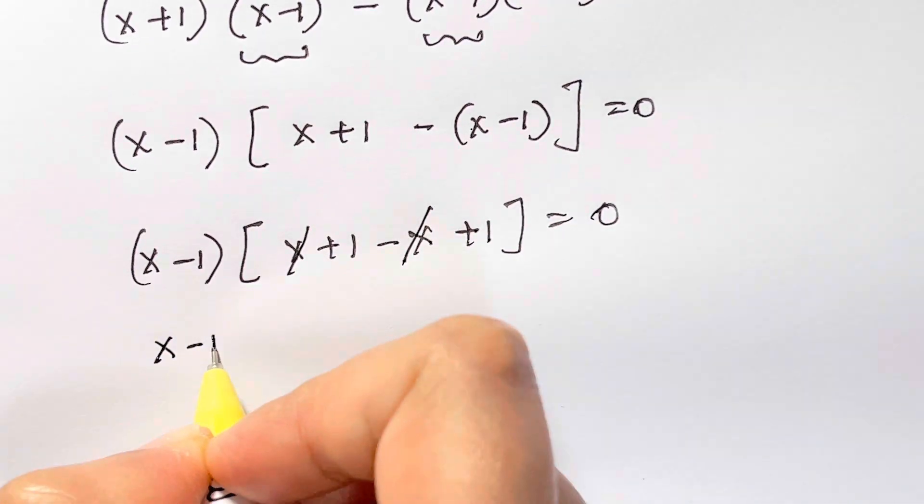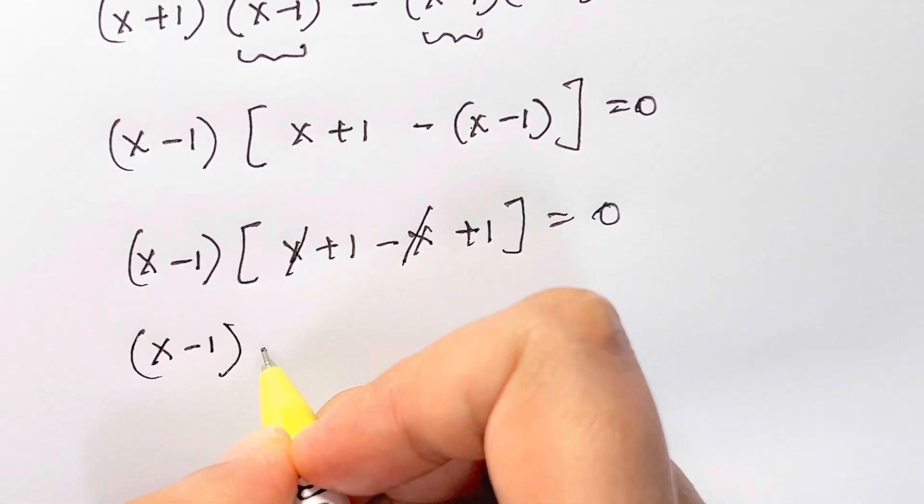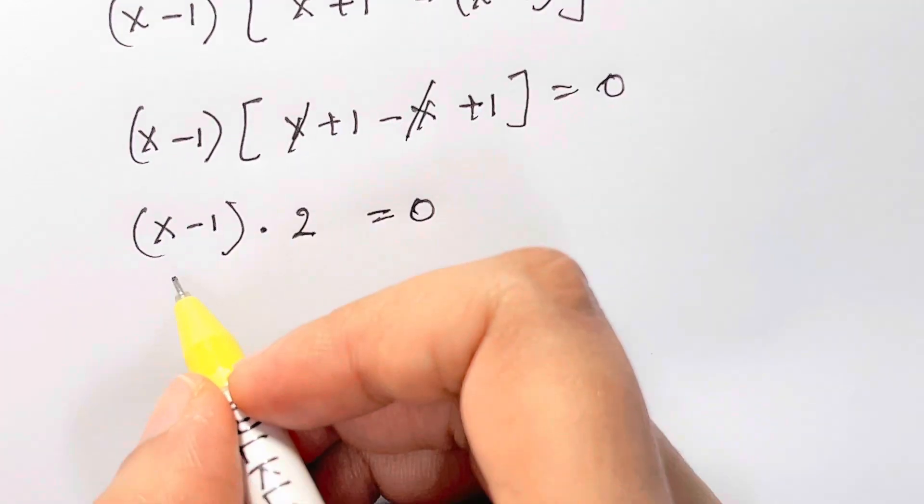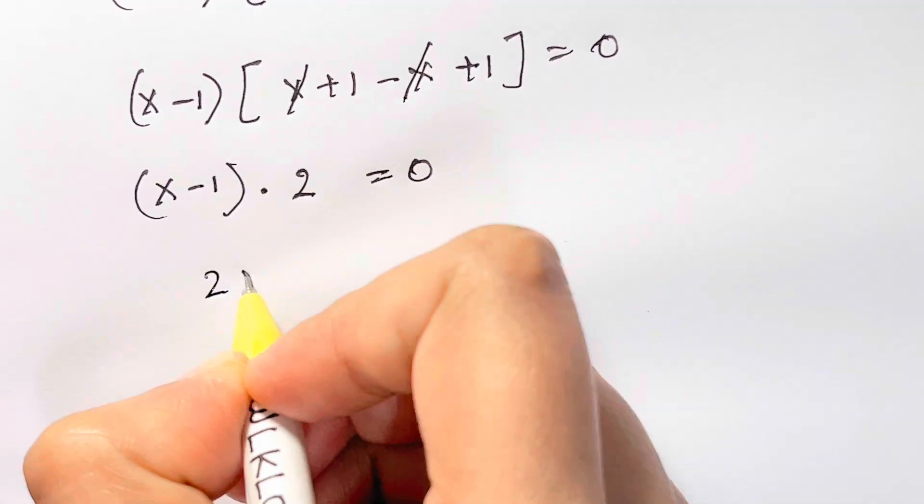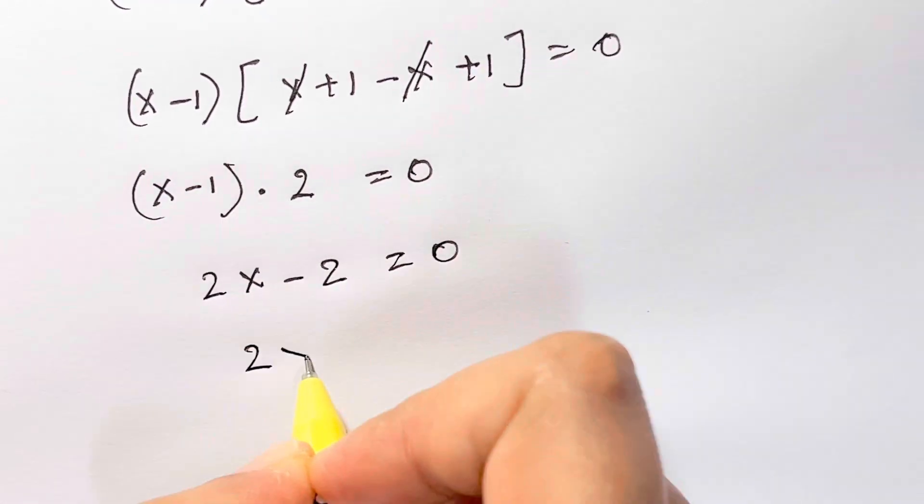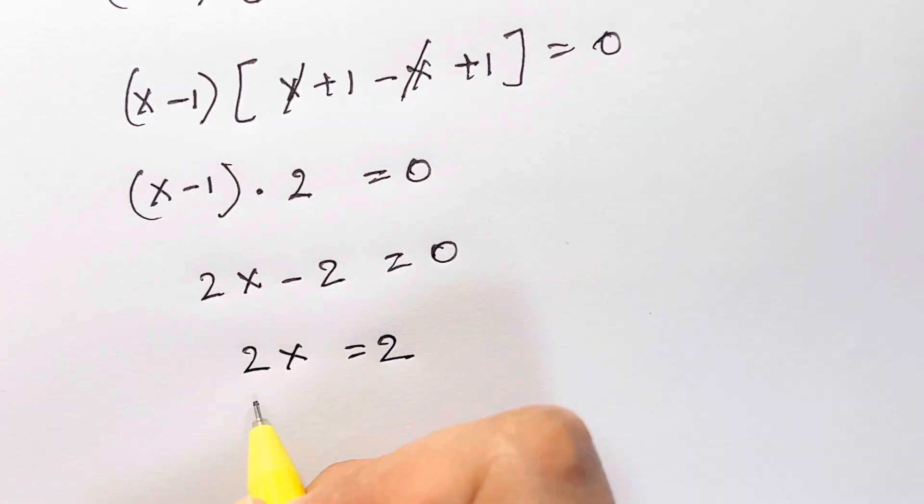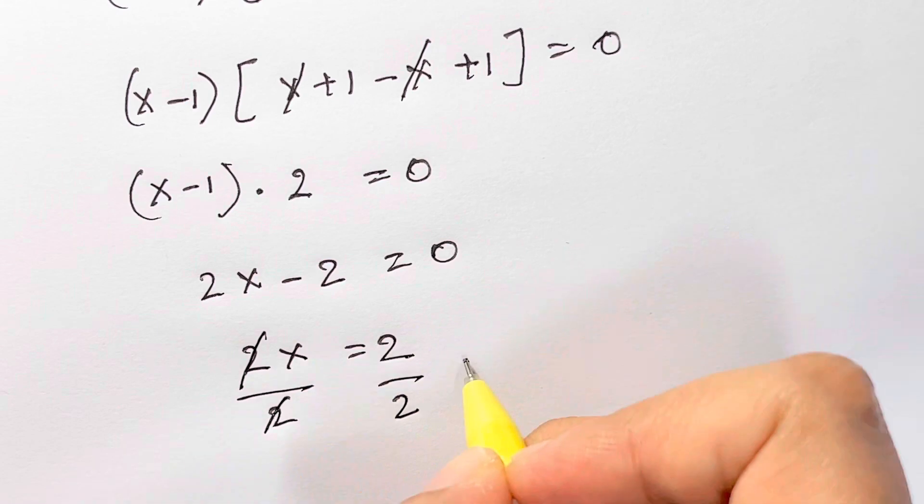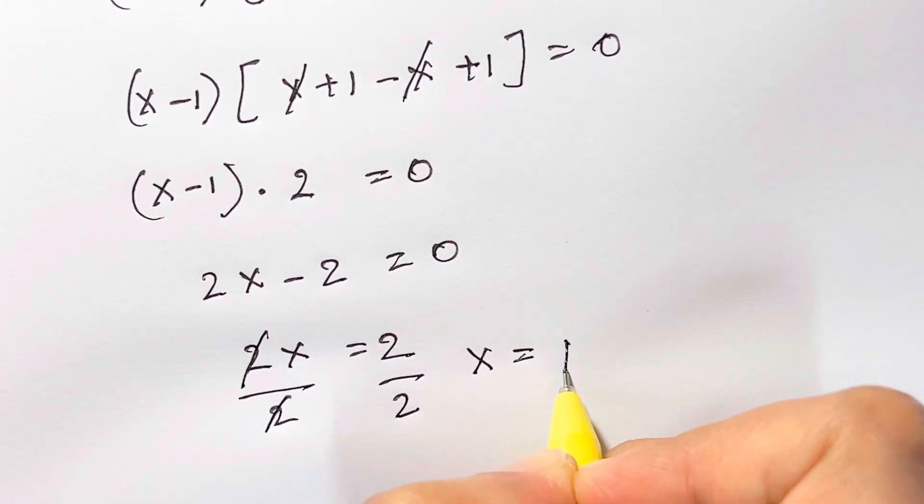So you have x minus 1 times 2 is equal to 0. We are just going to multiply them. 2x minus 2 is equal to 0. When you set it the other side, you have 2x is equal to 2. Divide both sides by 2 to eliminate this 2. So you are left with x is equal to 1.